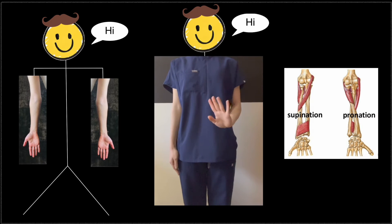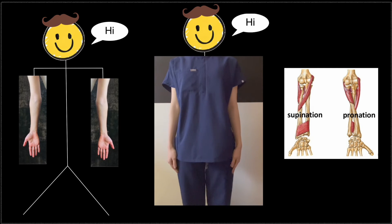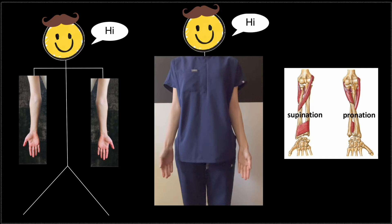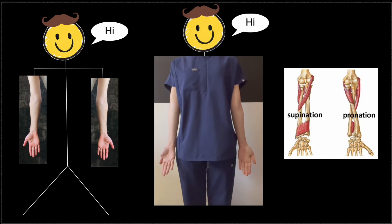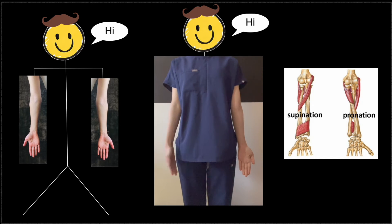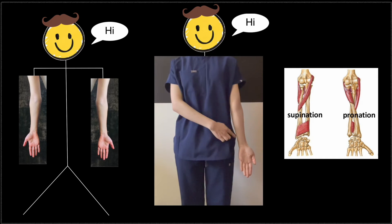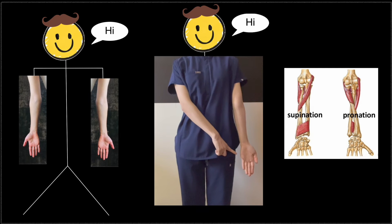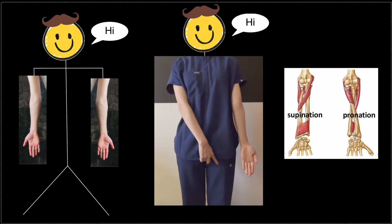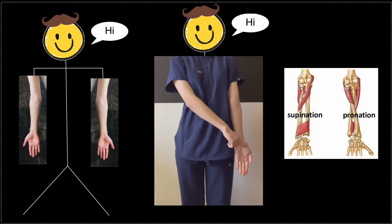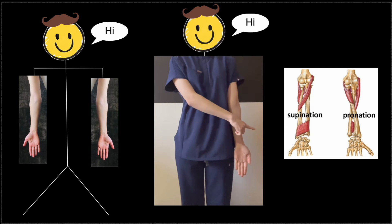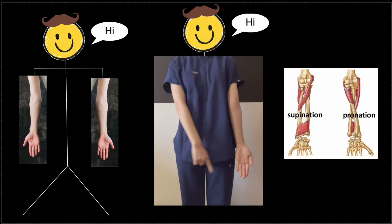Here you can see me demonstrating anatomical position again. The palm is facing forward, the pinky finger is at the medial side, and the thumb is at the lateral side.